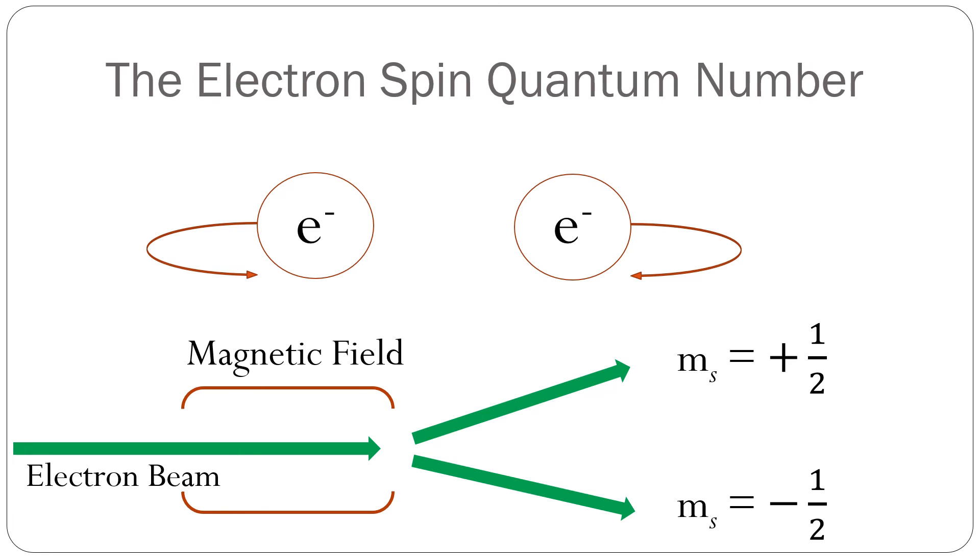These are the electron spin quantum numbers. We generally refer to these states as spin up and spin down.